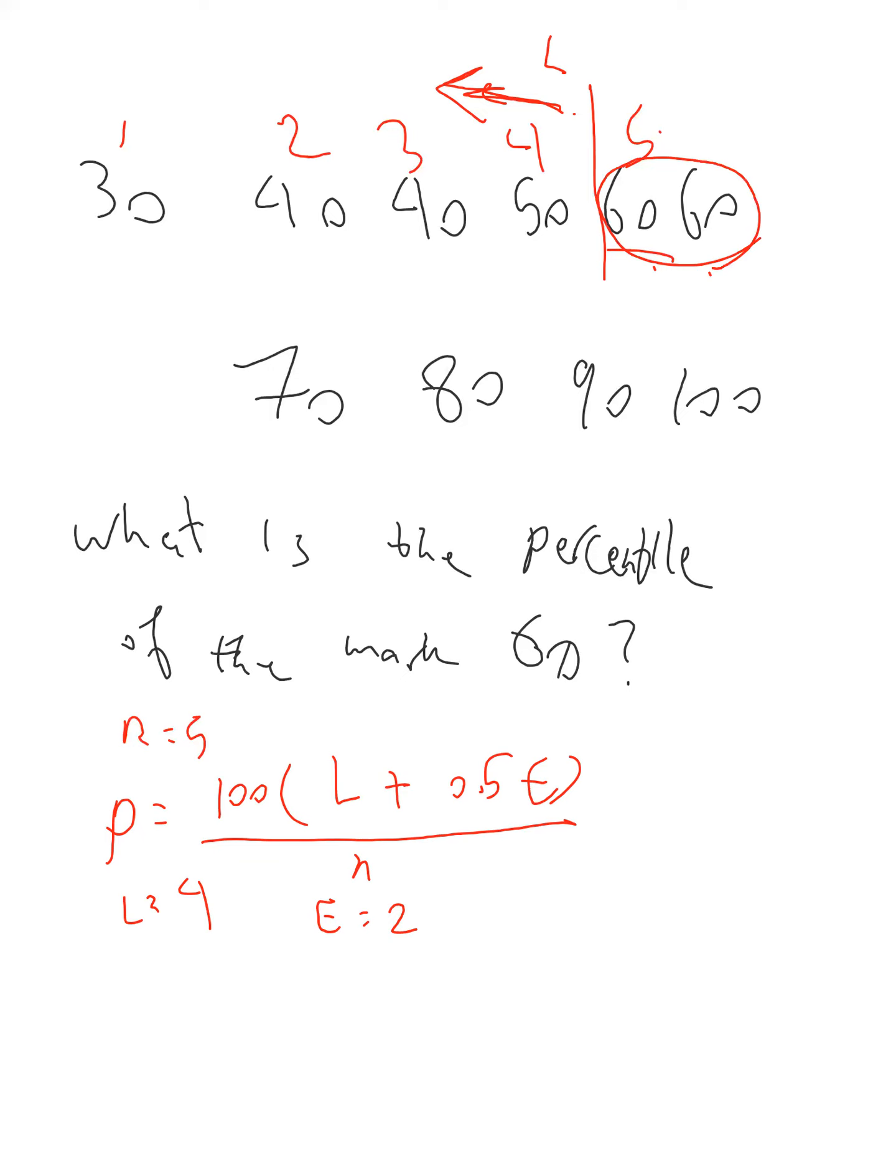So therefore, now we can put it, and N is 10. So we can put the P here in this formula, 4 plus half of 2 over 10. The number would be 50.